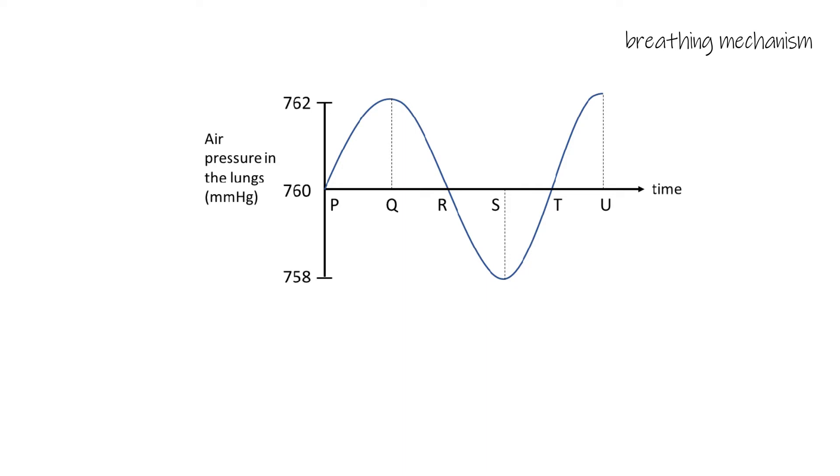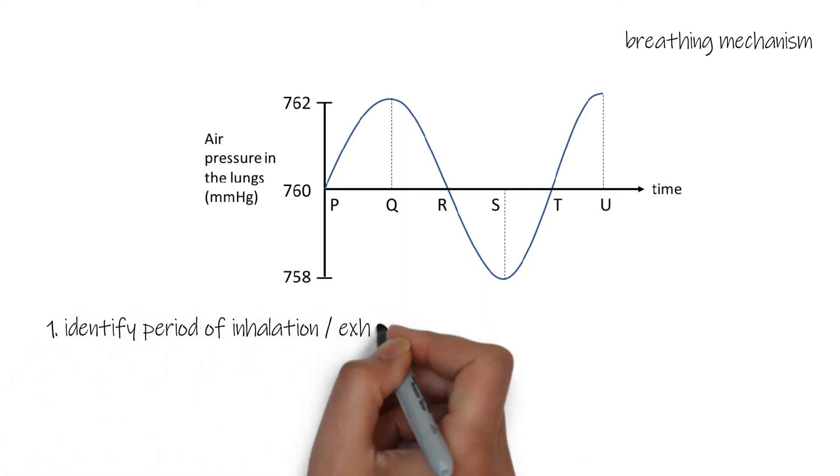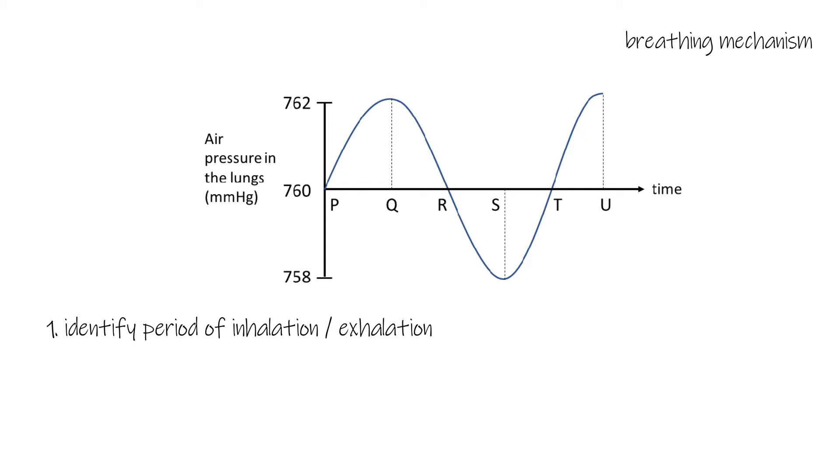About this curve, there are two types of DSE questions. First, the question will ask you to identify the time period for inhalation or exhalation. Second, you need to point out the state of the breathing muscles.